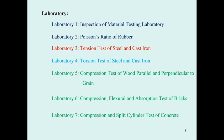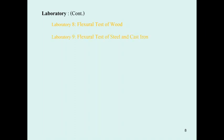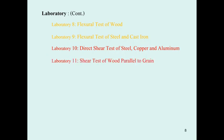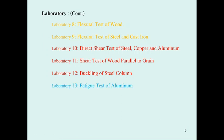I used different color sets to separate the groups of testing instruments we will use. Labs one and two go together; lab three is independent; lab four is independent; and labs five, six, and seven use the same machine in the F4 building. Lab eight is the fracture test of wood, lab nine is the fracture test of steel and cast iron, lab ten is the rivet shear test, lab eleven is the shear test of wood parallel to the grain, lab twelve is the steel column test — related to the last chapter of mechanics of materials — and lab thirteen is the fatigue test of aluminum.